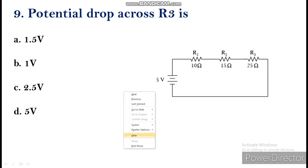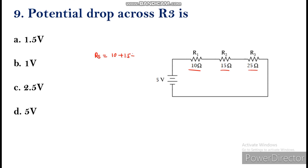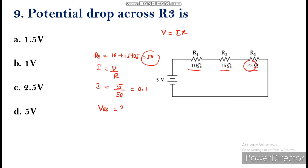The ninth question: the potential drop across R3. This is a series circuit. Effective resistance RS = 10 + 15 + 25 = 50 ohms. Current I = voltage divided by resistance = 5 divided by 50 = 0.1 ampere. Voltage across R3 equals I × R = 0.1 × 25 = 2.5 volts.